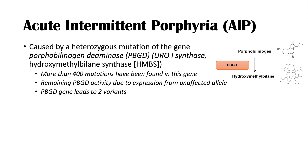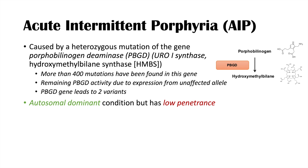The porphobilinogen deaminase gene leads to two variants - one hepatic and one systemic variant - and what happens in AIP is due to the hepatic variant. AIP is an autosomal dominant condition but has low penetrance, meaning it gets passed on generation to generation but we don't necessarily see the phenotypic effects in every individual. AIP is the second most common type of porphyria, second to porphyria cutanea tarda.